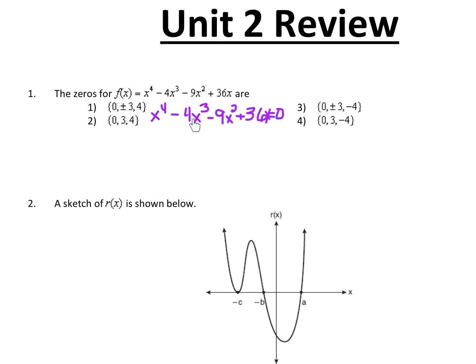If you look at all of your terms, you want to first say: can I factor out a greatest common factor? Now that that x is in there — yes, you can pull an x out of each of these terms. So I'm going to start off by pulling out an x, which will leave me with all of my terms having the exponent one lower than what it originally was. So this x to the fourth becomes x cubed, this 4x cubed becomes 4x squared. Bring down the minus sign, then 9x, bring down the plus sign, and then 36. Close my parentheses, equals zero.